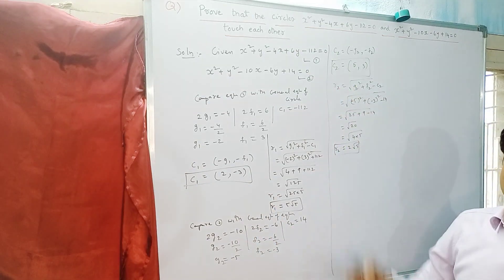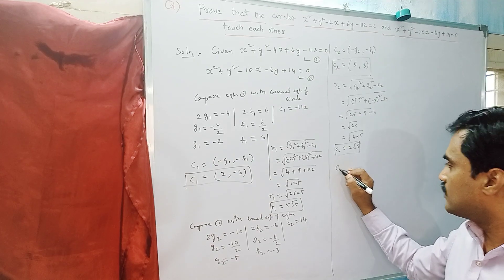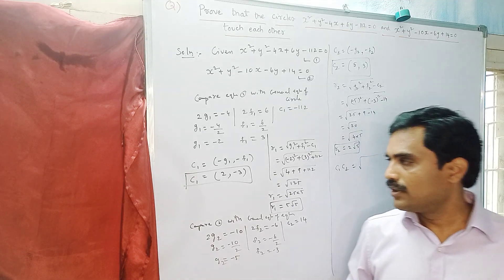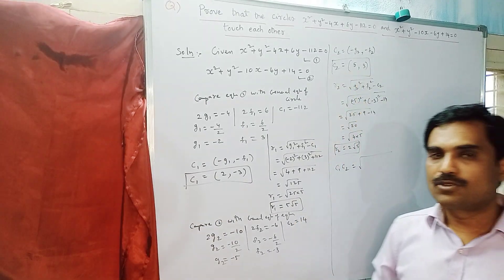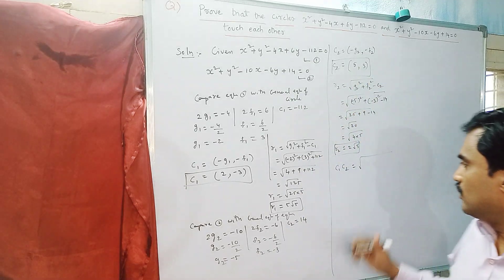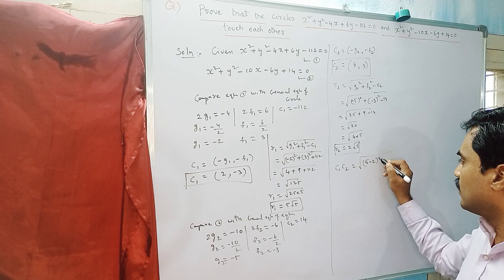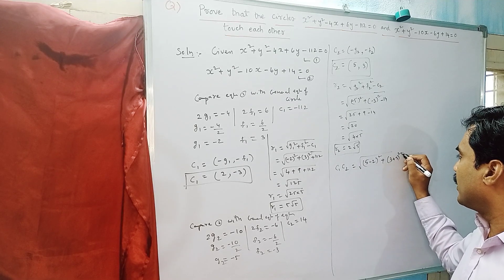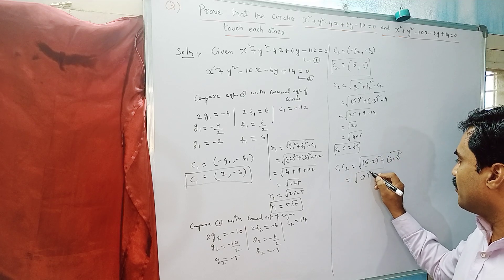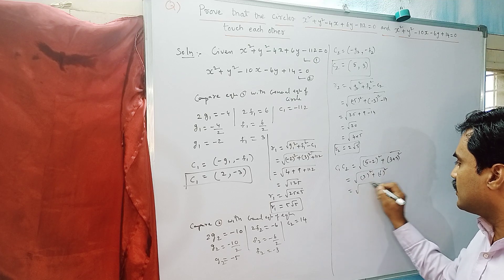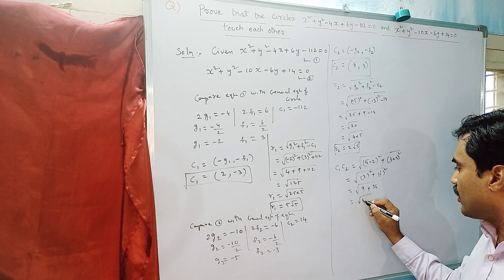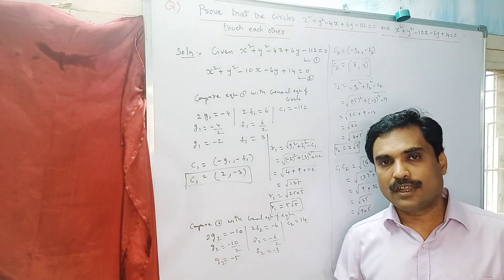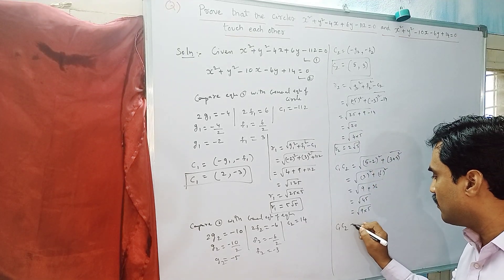Now we have the values of C1 = (2, -3) and C2 = (5, 3). Find the distance between C1 and C2 using the distance formula: √((x2 - x1)² + (y2 - y1)²). Taking C1 as (x1, y1) and C2 as (x2, y2): x1 = 2, x2 = 5, y1 = -3, y2 = 3. So distance = √((5-2)² + (3-(-3))²) = √(3² + 6²) = √(9 + 36) = √45. Since 45 = 9 × 5 = 3² × 5, we get C1C2 = 3√5.